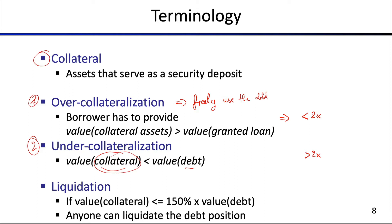In the under-collateralized setting, access to funds is highly restricted. You will not actually have access to the funds directly — the smart contract will manage how you can deal with the money or what is being done with the money. The under-collateralized setting is much more restricted precisely because you don't want borrowers to just leave with their debt.